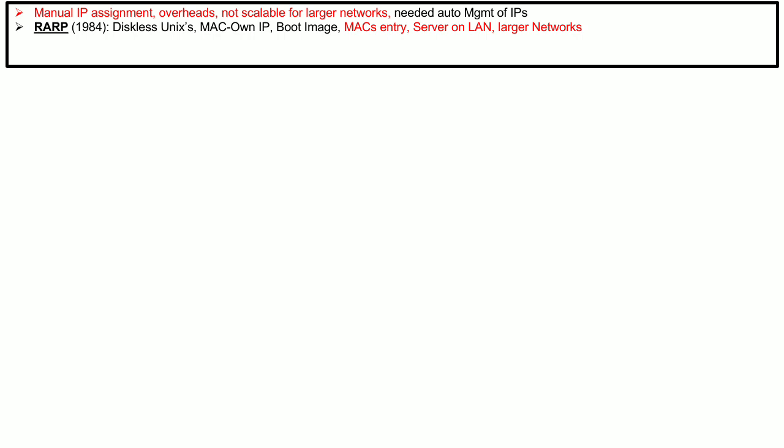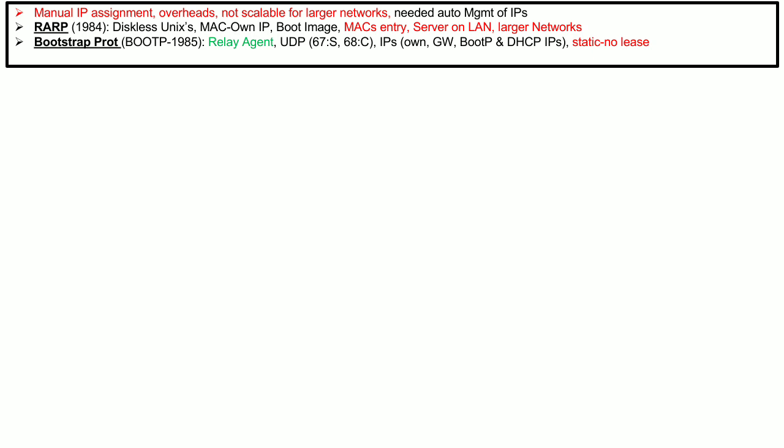The Bootstrap Protocol, or BOOTP, was introduced in 1985 as a successor to RARP. It mainly introduced the concept of a relay agent, which can be used to locate the BOOTP server even if it is not on the same local area network. This relay agent was used to obtain the IP address from the DHCP server on behalf of the endpoint.